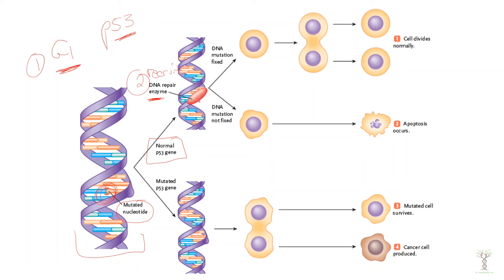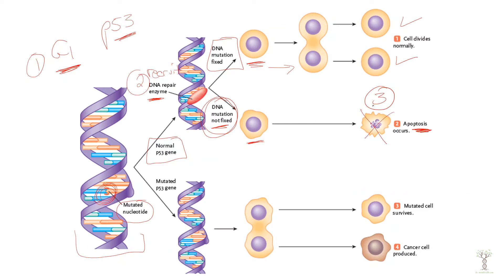Two things can then happen: one, the DNA mutation can be fixed, the cell is now normal, and it will go through mitosis producing two normal daughter cells. Or the DNA mutation cannot be fixed — sometimes DNA repair enzymes can't fix the mistake. Then p53 has a third function: it will trigger apoptosis. Apoptosis is normal programmed cell death, and the mutated cell no longer exists. So p53 stops the cell cycle, recruits repair enzymes to fix the mistake, and if the mistake can't be fixed it triggers apoptosis.